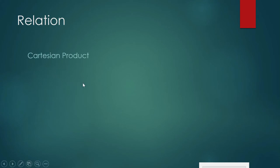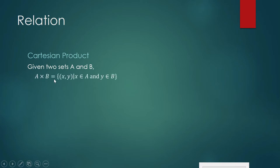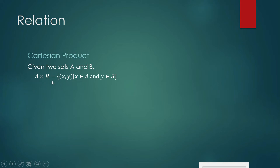Let us begin with a relation. Last time we spoke about Cartesian product and we defined it this way: if you have two sets A and B, the Cartesian product A cross B is equal to a set of ordered pairs (x, y) — a pair of objects where x comes from A and y comes from set B. You call x the first coordinate and y the second coordinate. It is a set of ordered pairs because you cannot just switch these two objects.